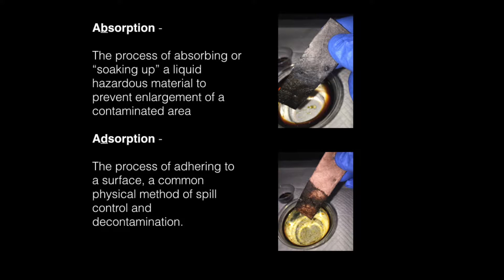In Hazmat Emergency Response, we define absorption as the process of physically soaking up a liquid hazardous material to prevent enlargement of a contaminated area. Common absorbent materials include sawdust, clay, and commercially available sorbent pads, pillows, and booms.